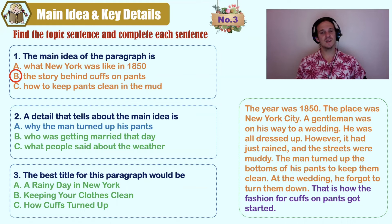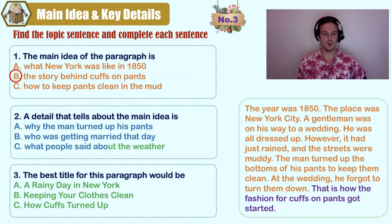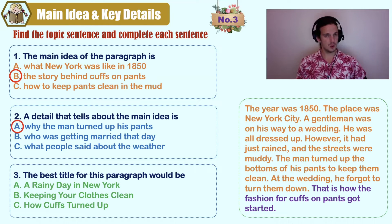What detail is in the story that talks about the main idea? A) why the man turned up his pants, B) who was getting married that day, C) what people said about the weather. The answer is A. We know the man turned up his pants because he was going to a wedding and didn't want his pants to get dirty from the rain.